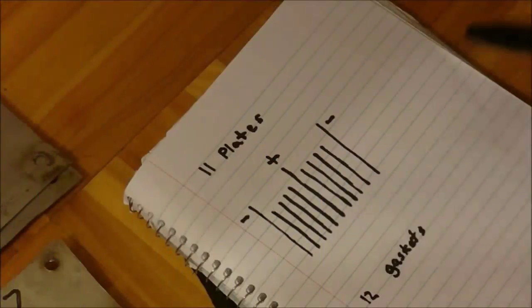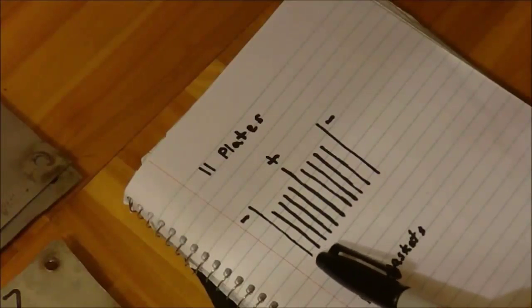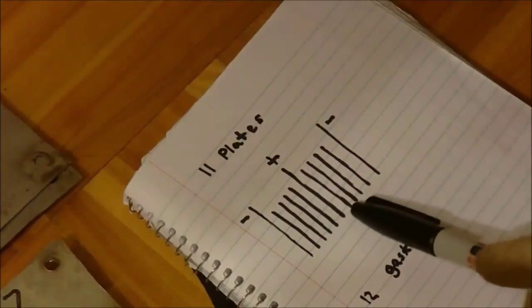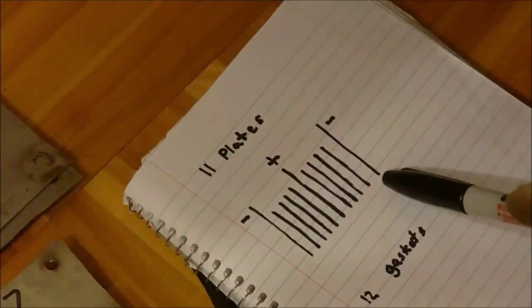I'll show you the alignment of the plates here. I have the power plate negative here, four neutral plates, a positive power plate, four neutral plates, and then a negative power plate.